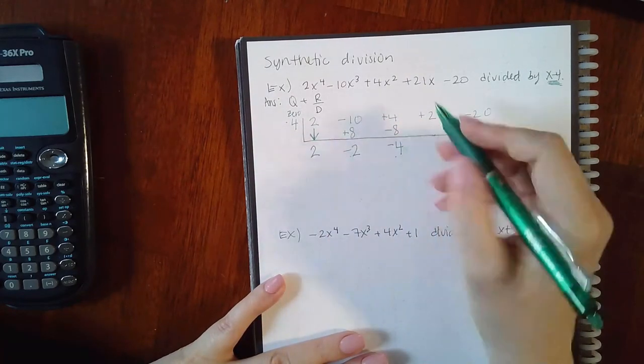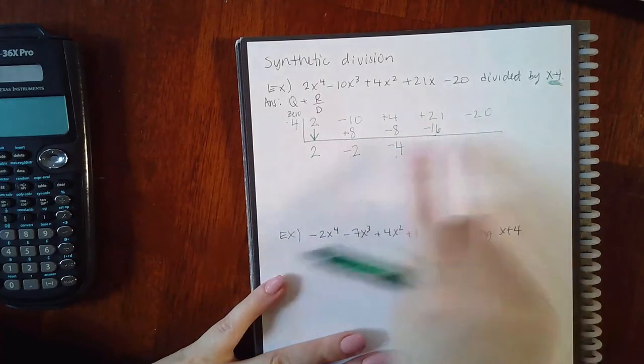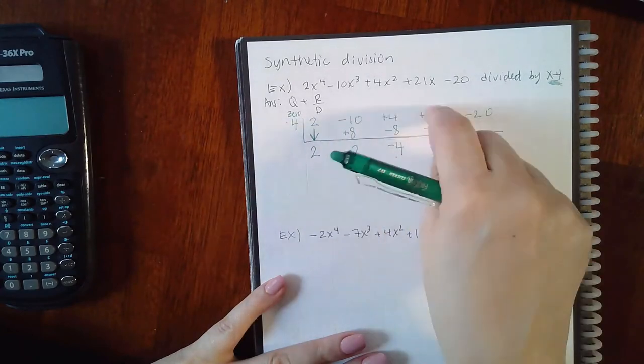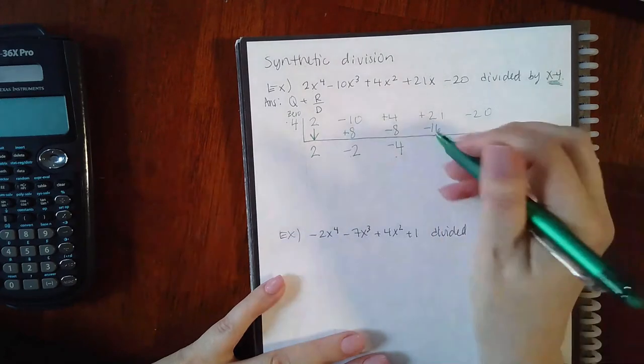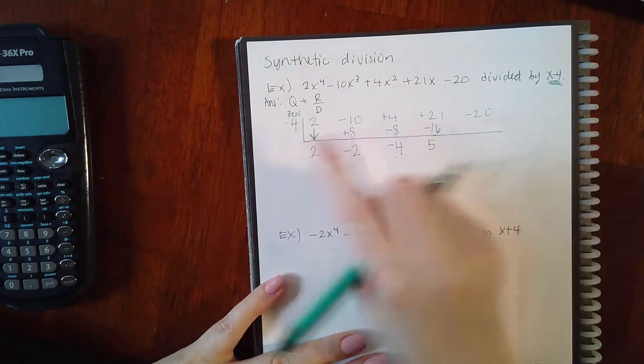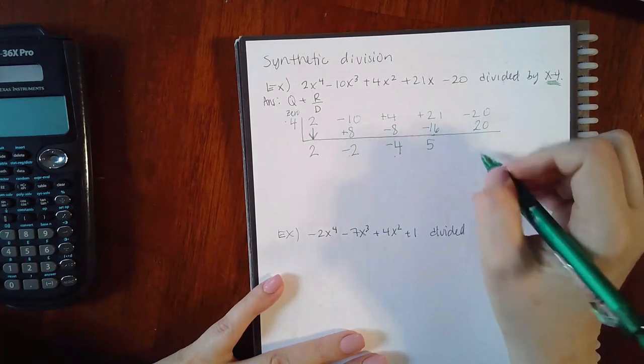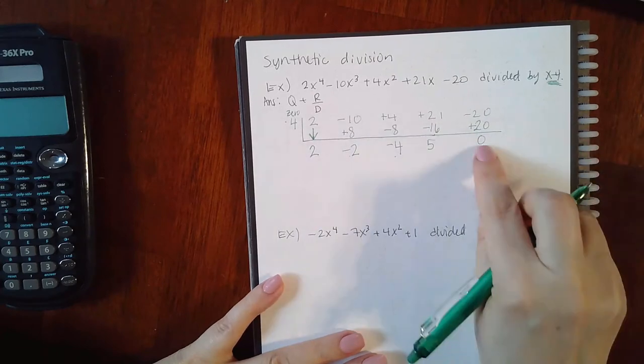Four times negative 4 is negative 16. Only the guys down here get multiplied by 4. The guys inside get added or subtracted according to their signs. Negative 21 minus 16 will give me positive 5. Four times 5 will give me 20, and then 20 plus 20 will give me 0.